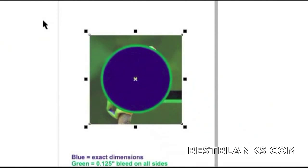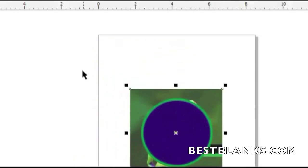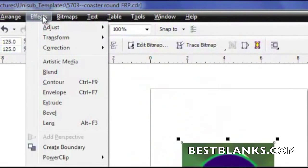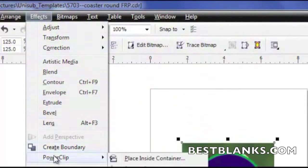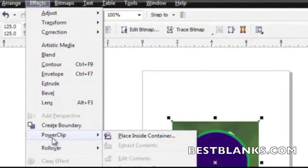The fourth step is to reshape the artwork to match the shape of the template. Click on effects, click on power clip, and then place inside container.